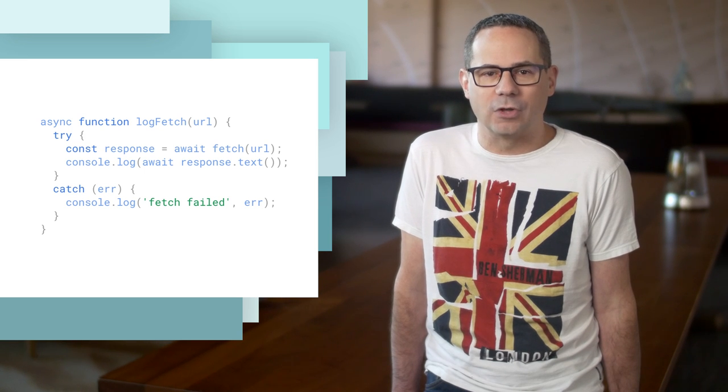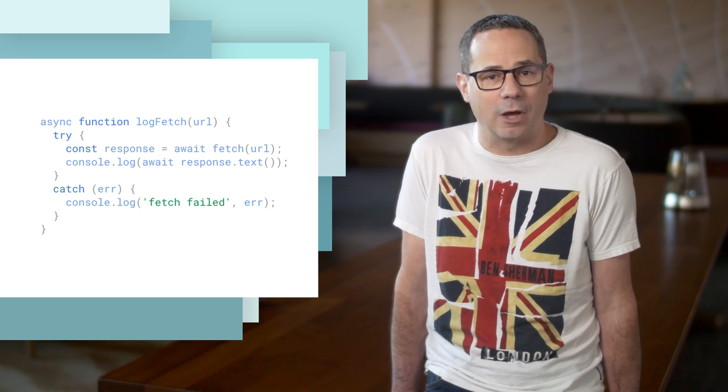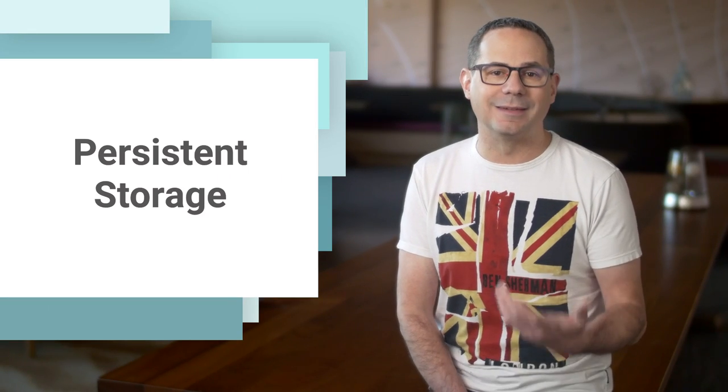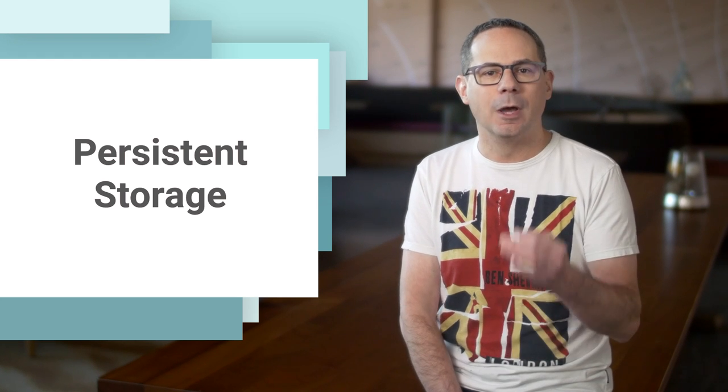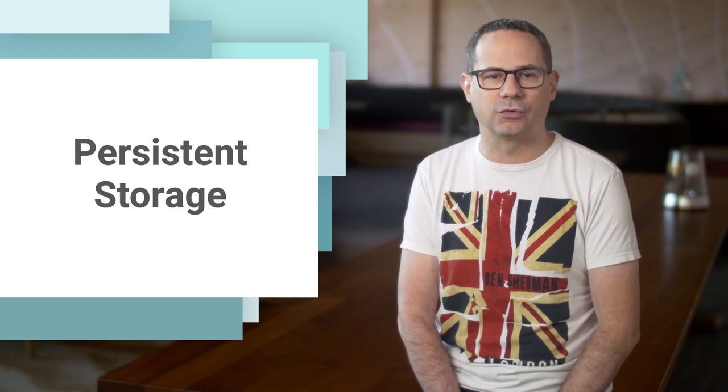Jake has a great post on developers.google.com/web/updates with all the details. The persistent storage origin trial is now over. You can now mark web storage as persistent, preventing Chrome from automatically clearing the storage of your site. In addition, sites that have high engagement, have been added to the home screen, or have push notifications enabled are automatically granted the persistence permission. Check out Chris Wilson's post for full details on how you can request persistent storage for your site.